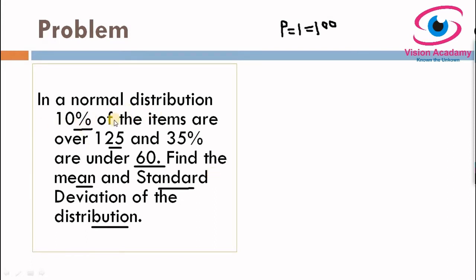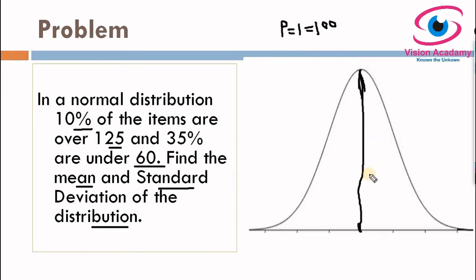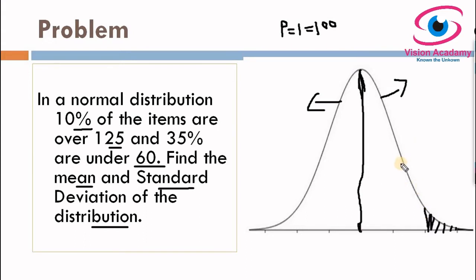One more thing you must keenly observe: in a normal distribution, 10% of the items are over 125. You have to think whether this falls in the upper tail or lower tail. Consider this is a normal curve — the right side is the upper tail and the left side is the lower tail. Reading the problem again: 10% of items are over 125, so 'over 125' means it must fall in the upper tail, because this is a case of above or over the mean. So we consider 10% in the upper tail region.